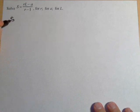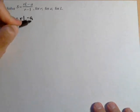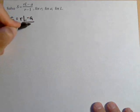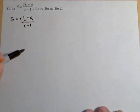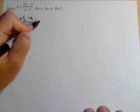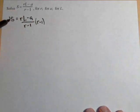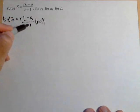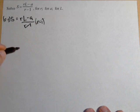So we start with S equals RL minus A over R minus one. The first thing we're gonna want to do is get that R out of the denominator. We can do that by multiplying both sides by R minus one. Because those will cancel, we no longer have a fraction and R is out of the denominator.